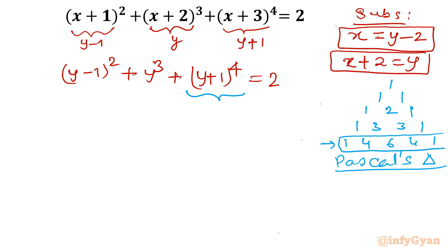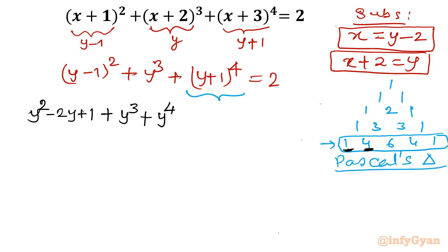These are our coefficients which I will apply. Let me finalize the equation. (y−1)² expands to y²−2y+1, plus the second term y³ as it is, plus the expansion of (y+1)⁴: writing in descending order — y⁴ + 4y³ + 6y² + 4y + 1 = 2.